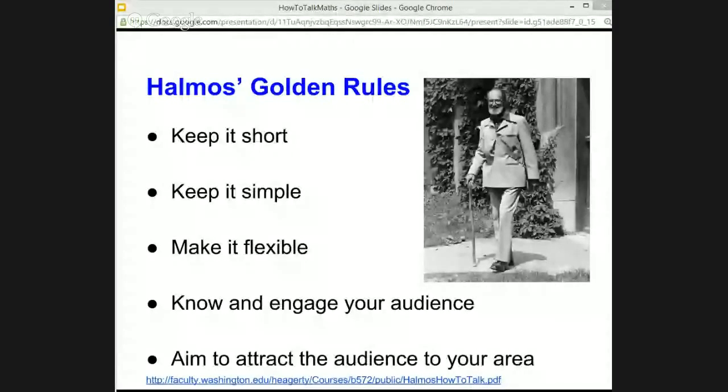There are the five golden rules of Paul Halmos for giving talks: keep it short, keep it simple, make it flexible, know your audience and engage with them, and the aim is to attract the audience to your area. What ideas do you have for communicating mathematics or any form of communication? If you have any tips, I would love to hear them — put them in the comments section. Hope you enjoyed this presentation. Thanks again to Paul Halmos for inspiring me to do this video.